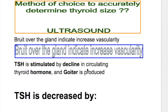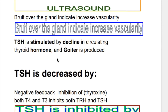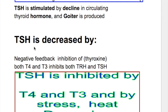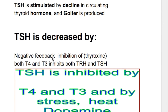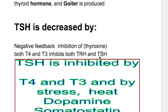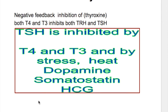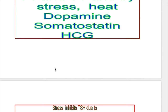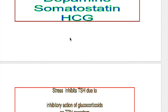TSH is stimulated by a decrease in circulating thyroid hormone, and goiter is produced. Conditions that decrease TSH include: negative feedback inhibition by thyroxine — both T4 and T3 act on the hypothalamus and pituitary to inhibit secretion of TRH and TSH. Other factors that inhibit TSH are stress, heat, dopamine, somatostatin, and HCG.